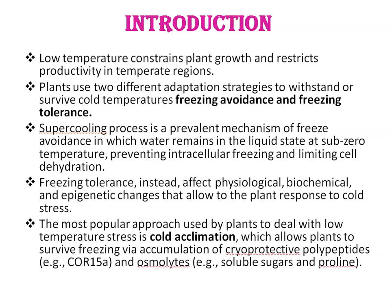Plants use two different adaptation strategies to withstand or survive cold temperatures: freezing avoidance and freezing tolerance. The supercooling process is a prevalent mechanism of freeze avoidance in which water remains in the liquid state at sub-zero temperature, preventing intracellular freezing and limiting cell dehydration. Freezing tolerance instead affects physiological, biochemical, and epigenetic changes that allow the plant to respond to cold stress. The most popular approach used by plants to deal with low-temperature stress is cold acclimation, which allows plants to survive freezing via accumulation of cryoprotective polypeptides, for example COR15A, and osmolytes, like soluble sugars and proline.